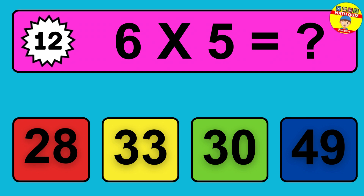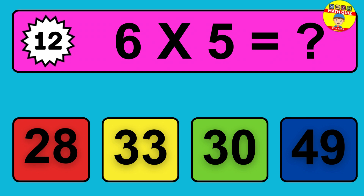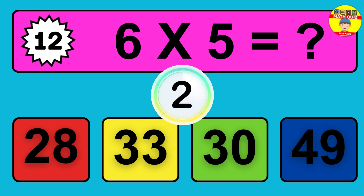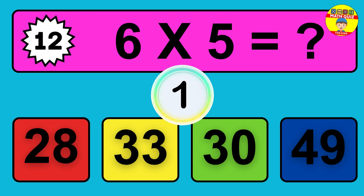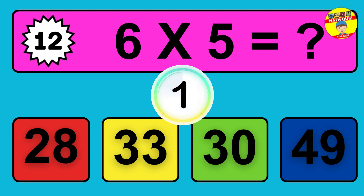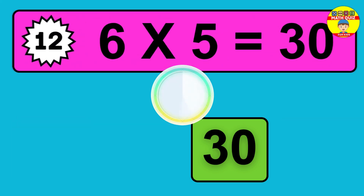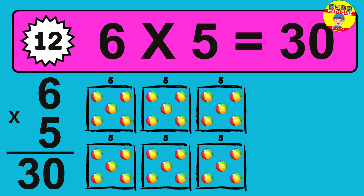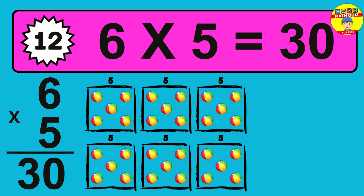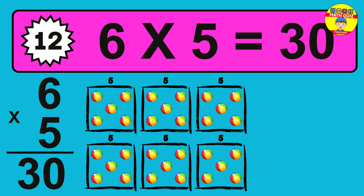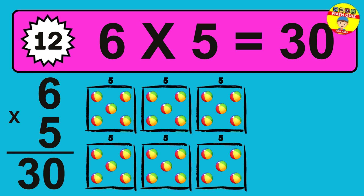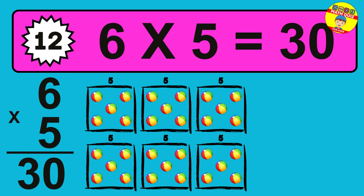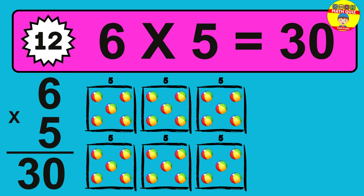Question 12. 6 times 5 equals what? So the answer is 6 times 5 is 30. To calculate, we have six groups with five balls each one. So how many balls do we have? 30 balls.